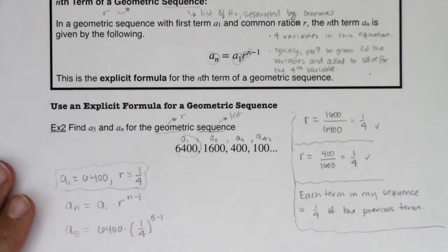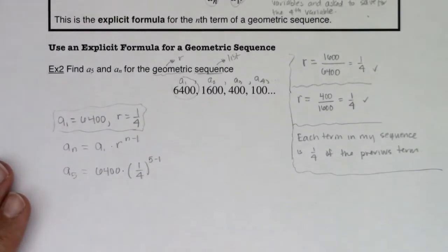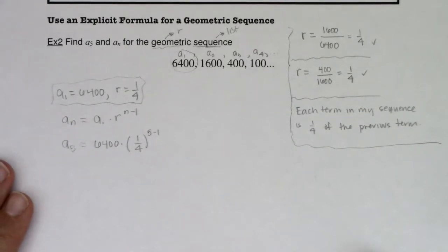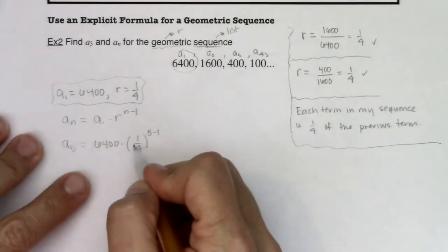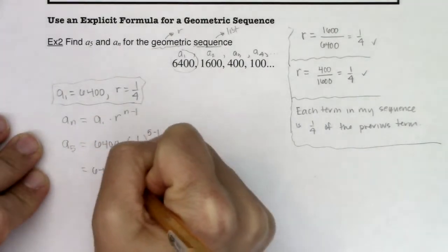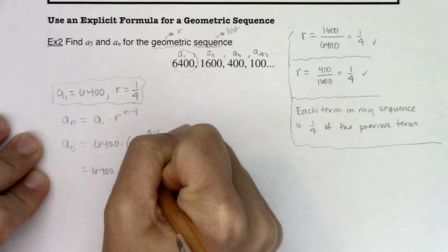If I take a look at this, let me make sure you have room to see what I'm going to do. Let me scooch this up. I think we're about to run out of room, and I want you to be able to see what I've got here. So let's crunch this on our calculator because this is ultimately 6,400 times 1 fourth to the fourth power.